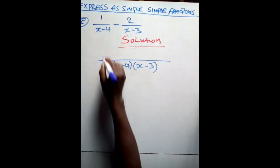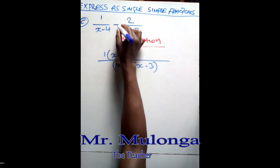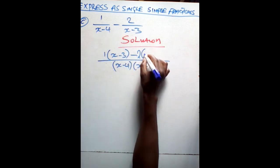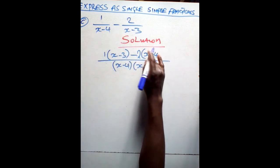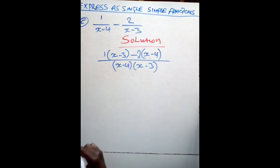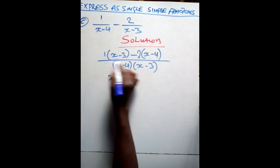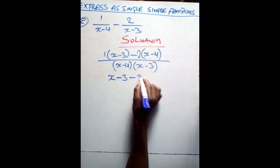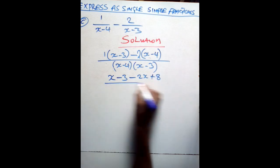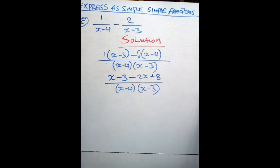If you cross multiply: this 1 will multiply (x minus 3), then minus — this minus — then this 2 will multiply (x minus 4). Open the brackets in the numerator. 1 times x gives you x. 1 times negative 3 gives you negative 3. Negative 2 times x gives negative 2x. Negative 2 times negative 4 gives you positive 8. Over (x minus 4)(x minus 3) — we maintain it the way it is.